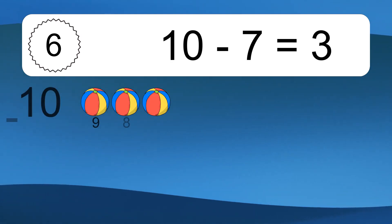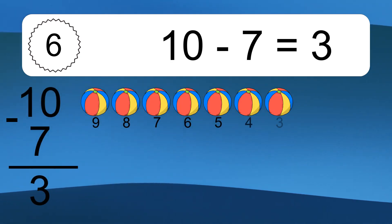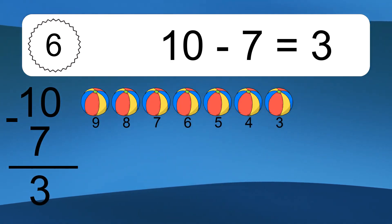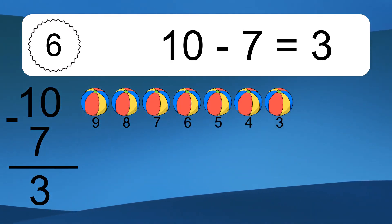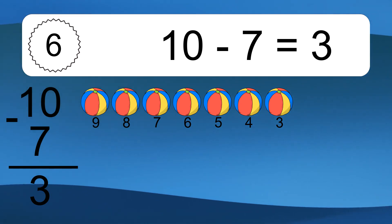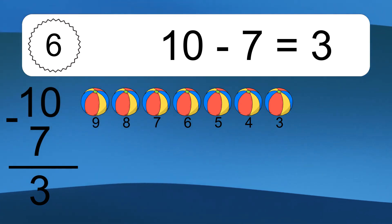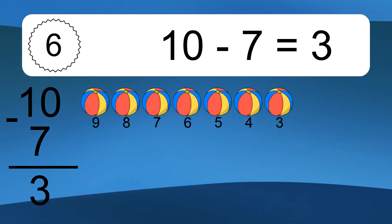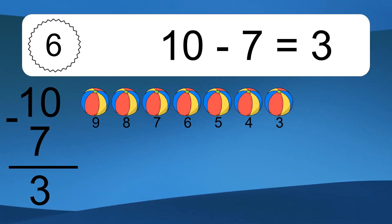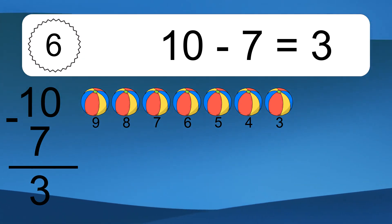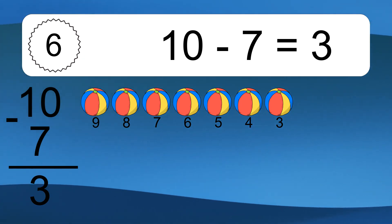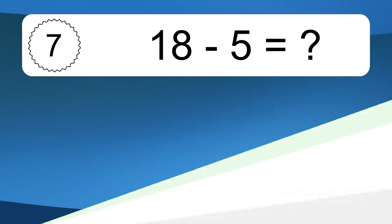10 minus 7 equals 3. Let's count it: 9, 8, 7, 6, 5, 4, 3.